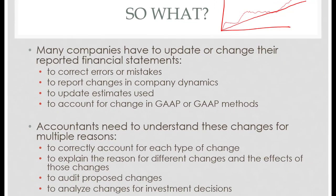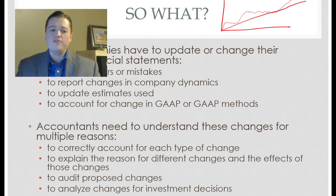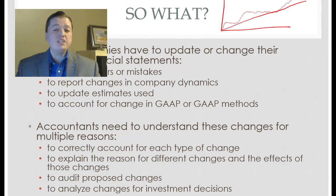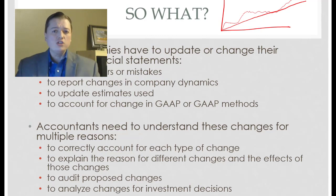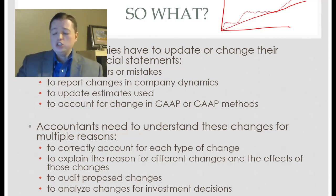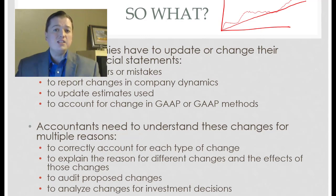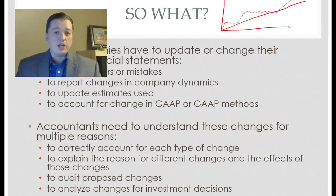The last type of change is a correction of an error. Could be we simply made a mistake — wrong number in the spreadsheet, wrong number in the financials. Could be the auditor missed something. Could be fraud — that's an intentional error and you can go to jail for that one. All of these errors, just like changes in entity, principle, or estimate, change what we show in the financial statements. The summary of those changes all end up in the statement of retained earnings in one way or another.